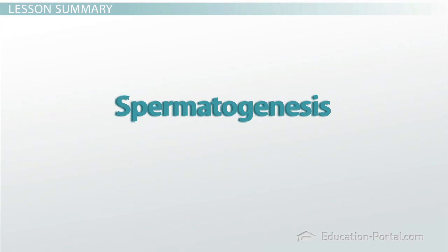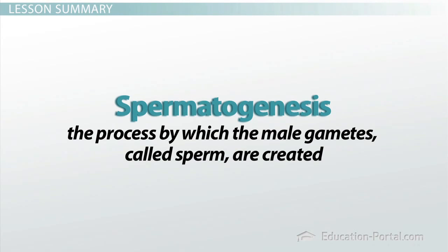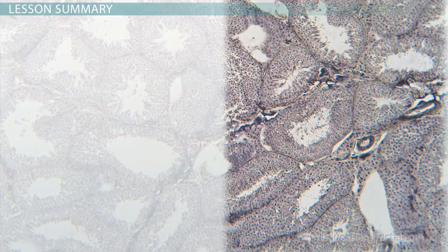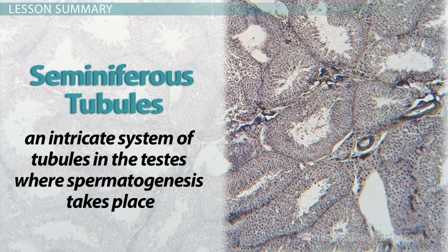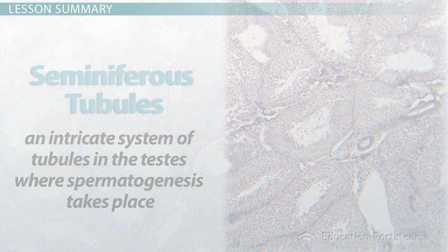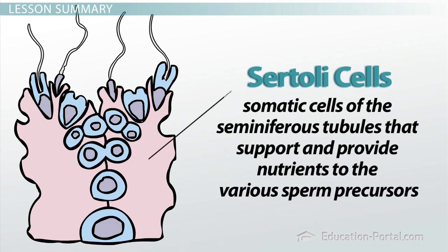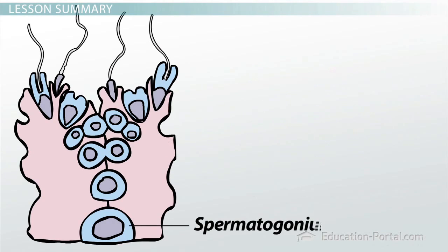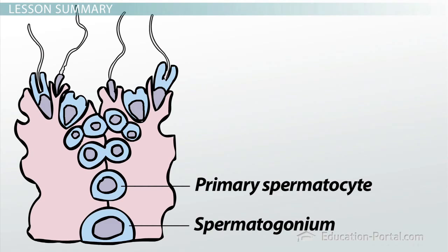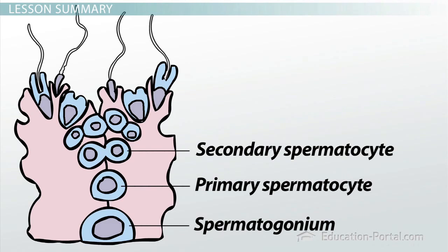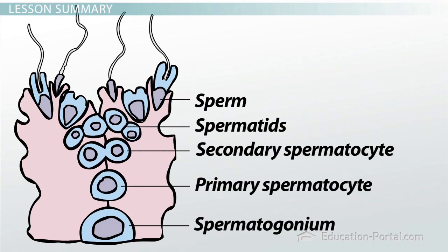Let's review. Spermatogenesis is the process by which the male gametes, called sperm, are created. It takes place in the seminiferous tubules, which are lined with an epithelial layer of Sertoli cells that support and provide nutrients to the various sperm precursors. The rapidly dividing spermatogonia are located at the base of the Sertoli cells. When a spermatogonium enters meiosis, it becomes a primary spermatocyte and migrates away from the base of the Sertoli cells, then divides to form two secondary spermatocytes, which continue migrating and divide to form four haploid spermatids. After meiosis is complete and each spermatid has the correct number of chromosomes, they differentiate into fully functional sperm.